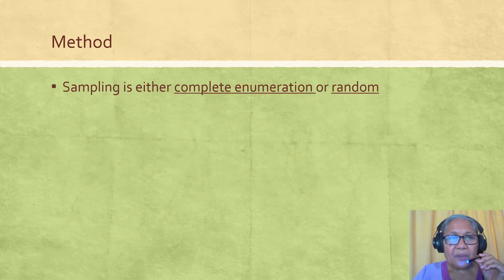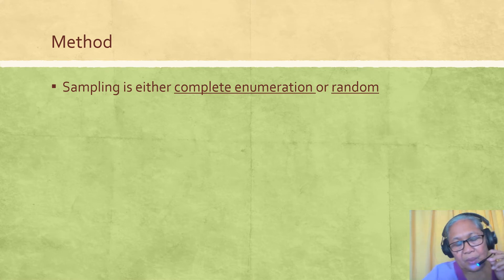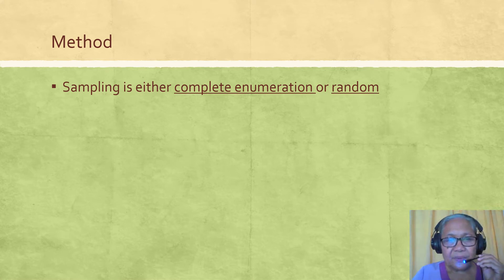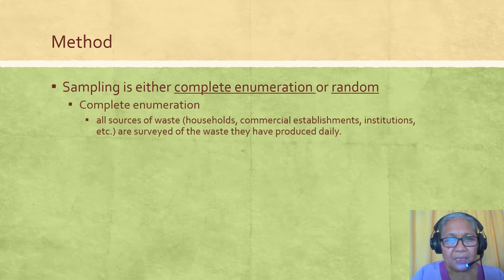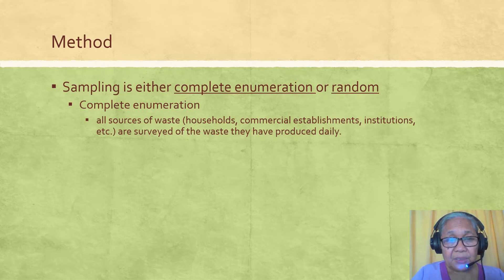Now, how are we going to go about WACS? First, of course, is to determine the sampling method. The sampling method would either be complete enumeration or random or purposive sampling. By complete enumeration, it means that all sources of waste are surveyed for the waste they have produced daily.